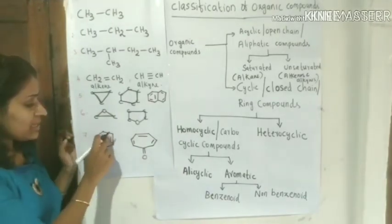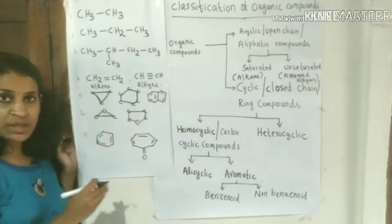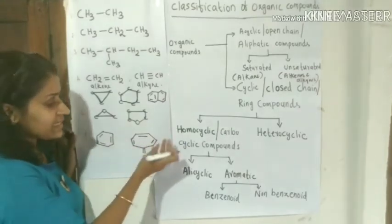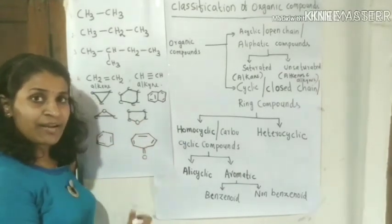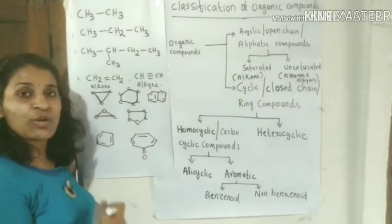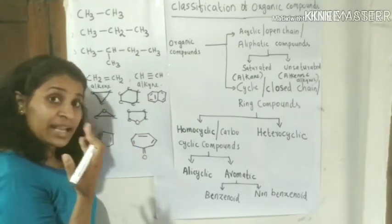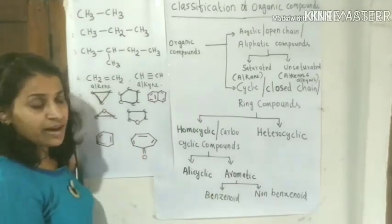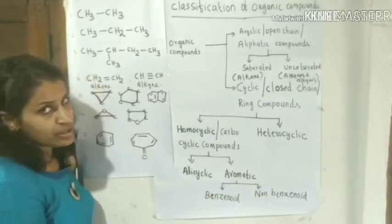For example, benzene has a double bond with 6 carbon atoms. Counting the carbon atoms: positions 6, 7, 8, 5, 4 — the benzene ring. These are not aromatic compounds in all cases; some are non-benzenoid compounds.